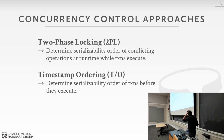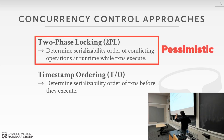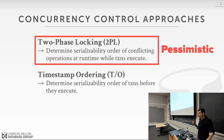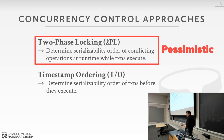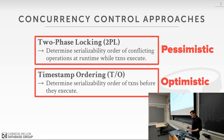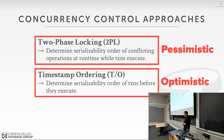Two-phase locking protocols are considered pessimistic concurrency protocols — they assume transactions will have conflicts and require them to acquire locks before reading or writing any object. Timestamp ordering is considered an optimistic protocol because we assume there won't be any conflicts; we don't require locks as transactions run, and at the end we figure out whether things went correctly.